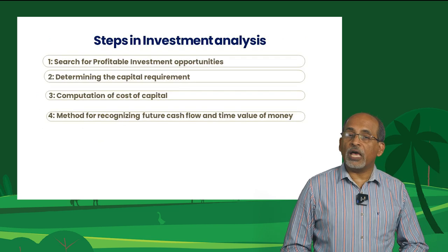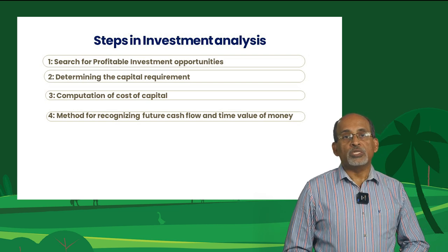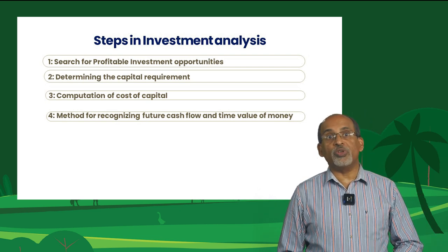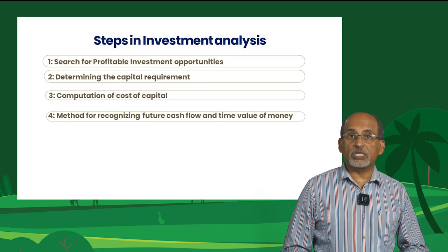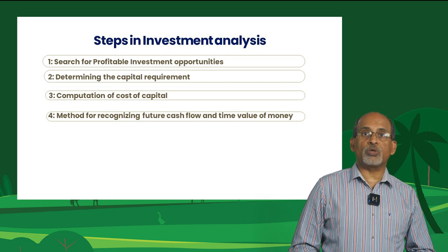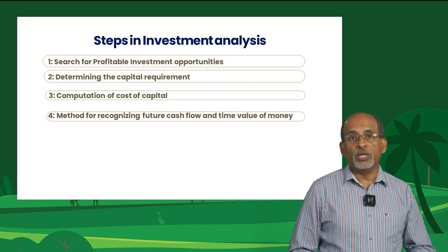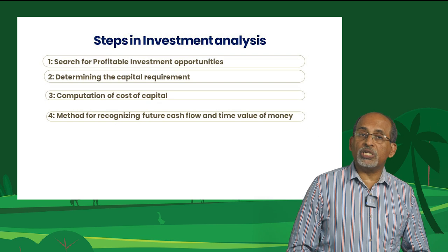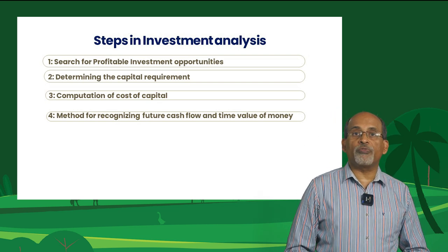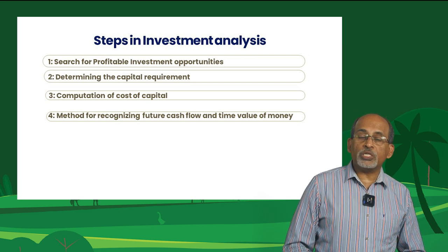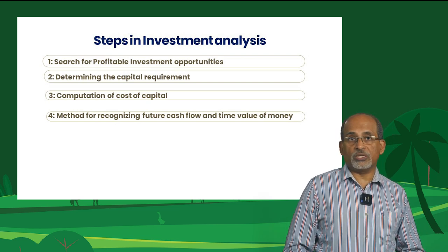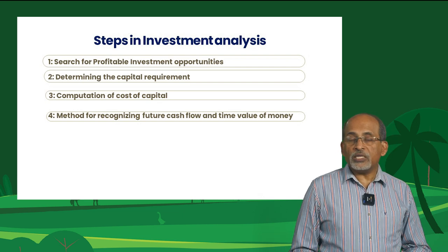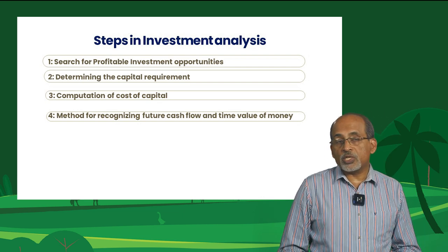What are the steps in investment analysis? The first step is searching for profitable investment opportunities. Some investment opportunities are obvious and require little effort to search, such as the need to replace worn-out parts of a tractor or farm equipment. Farm investment opportunities generally include maintenance and replacement of depreciated capital items, adoption of a cost-reducing technology, and expansion of output in existing enterprises. For example, if you have three cows and are thinking about increasing the number to ten, that is expansion of output in existing enterprises.